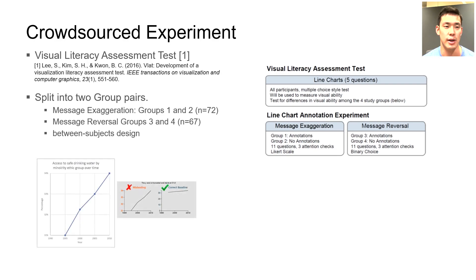For the message exaggeration test, group 1 had access to the annotation, while group 2 did not. The question was Likert-based, asking how much rate change occurred on a scale of 1 to 5.